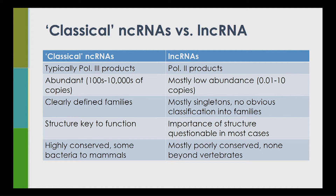One way that's useful for thinking about lncRNAs is contrasting them with classical non-coding RNAs such as tRNAs, microRNAs, snoRNAs, and ribosomal RNA. Classical non-coding RNAs are typically produced by specialized RNA polymerases, whereas a typical lncRNA is produced by RNA polymerase II.